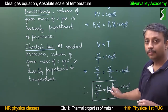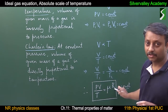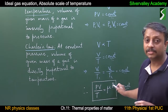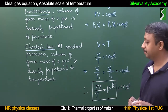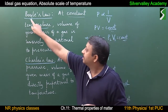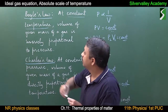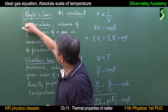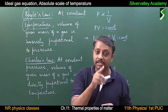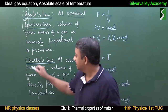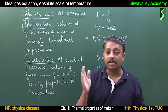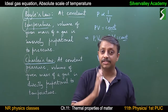Here μ is the number of moles and R is the gas constant, also called the universal gas constant. Boyle's law holds at constant temperature; Charles' law holds at constant pressure. If temperature is constant, the two variables are pressure and volume. If pressure is constant, the two variables are temperature and volume.